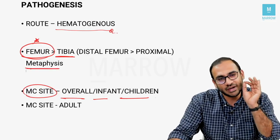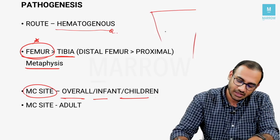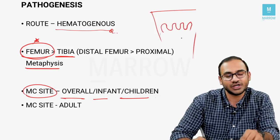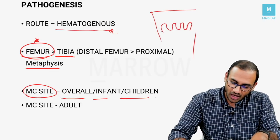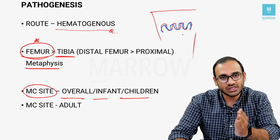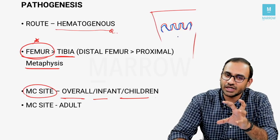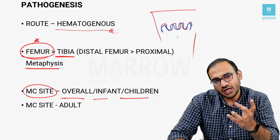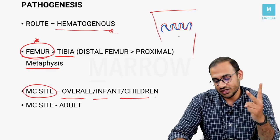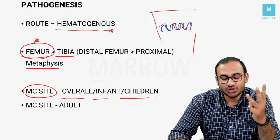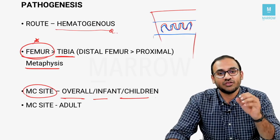Osteomyelitis most commonly affects the metaphysis of long bones. In the metaphysis, blood vessels are arranged in a unique hairpin loop fashion, causing stasis and sluggish blood flow. This leads to relative ischemia and hypoxia in that area. Additionally, this region is more vascular but relatively deficient in macrophages and monocytes, which is why organisms thrive when they enter the metaphysis.